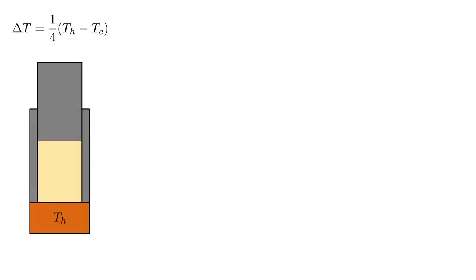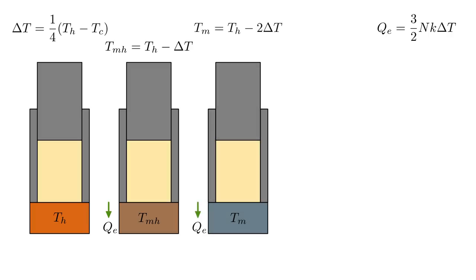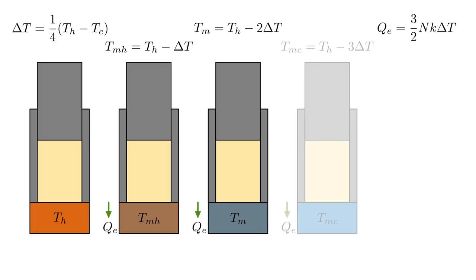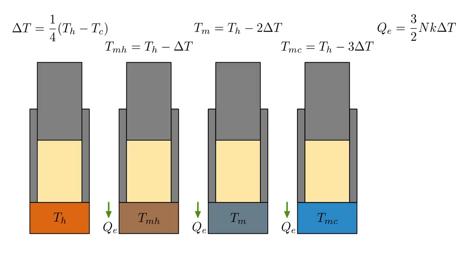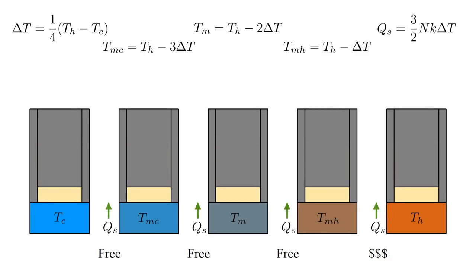An obvious extension is to add more intermediate heat reservoirs. Suppose we transfer heat in four steps, each with temperature change delta T equal to one-fourth T hot minus T cold. In the first step, we attach the gas to a medium hot reservoir and transfer one-fourth of the total heat to it. Then we transfer the same amount to the medium reservoir, then to a medium cold reservoir, and finally to the cold reservoir. We've now wasted only one-fourth of the total heat transferred. For heating, we can extract three-fourths of the required heat from the intermediate reservoirs and generate only the last one-fourth. A device that implements intermediate heat storage is called a regenerator, and it's essential to making the Stirling cycle engine as efficient as possible.